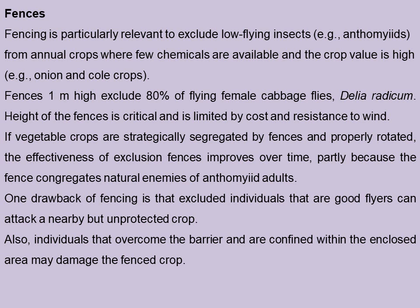Fencing is particularly relevant to exclude low-flying insects from annual crops where few chemicals are available and the crop value is high — for example, the onion and the cole crops comprising cauliflower and cabbage. Fences 1 metre high exclude 80% of flying female cabbage flies, i.e. Delia radicum.